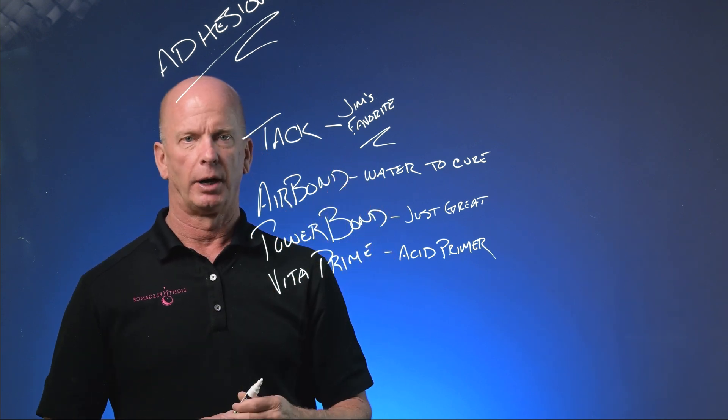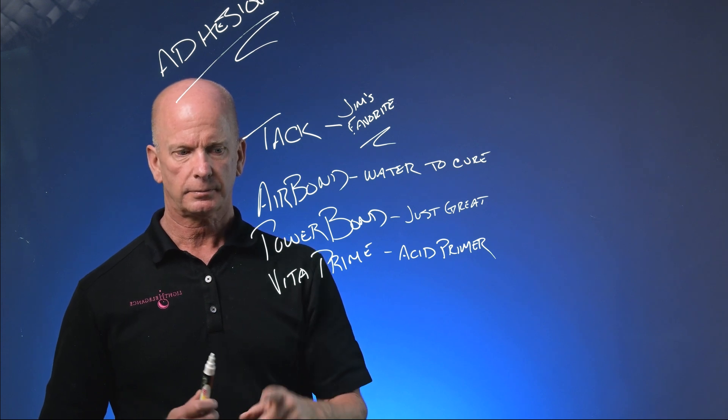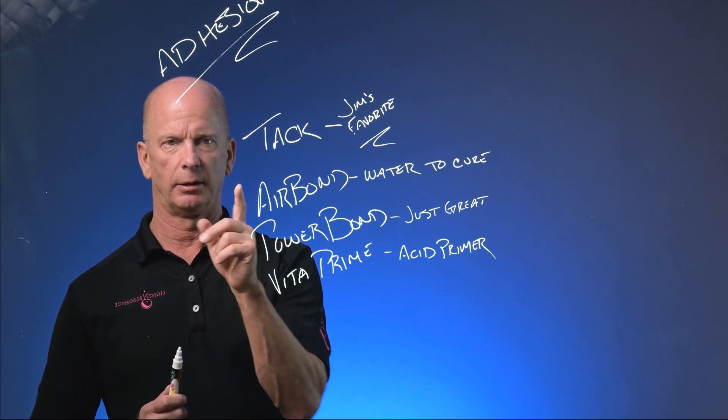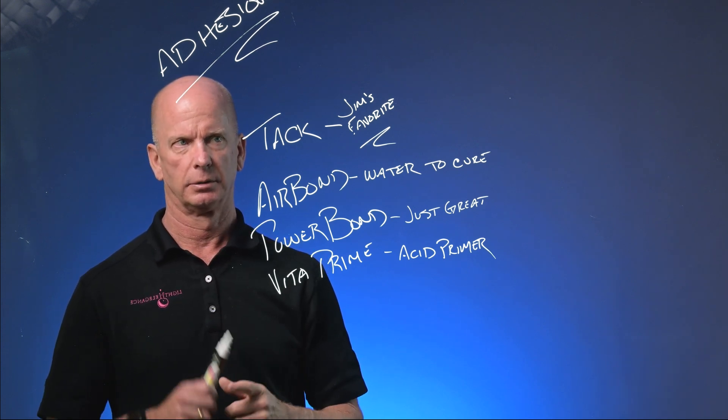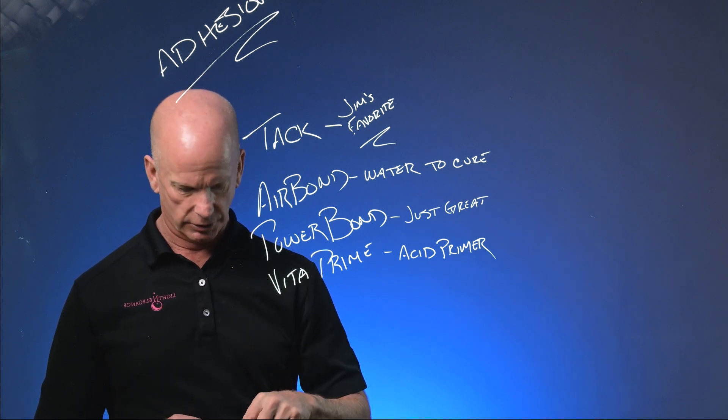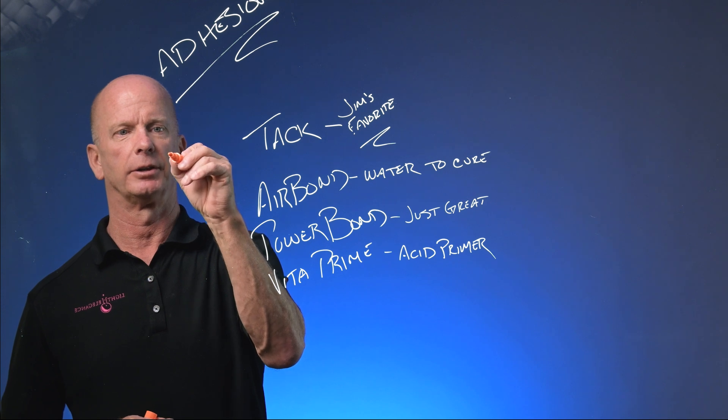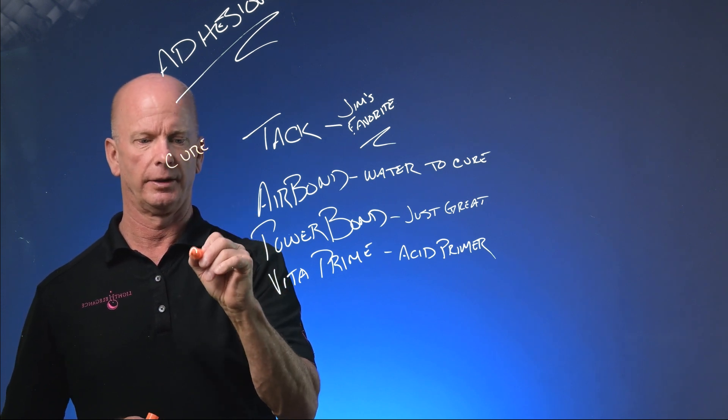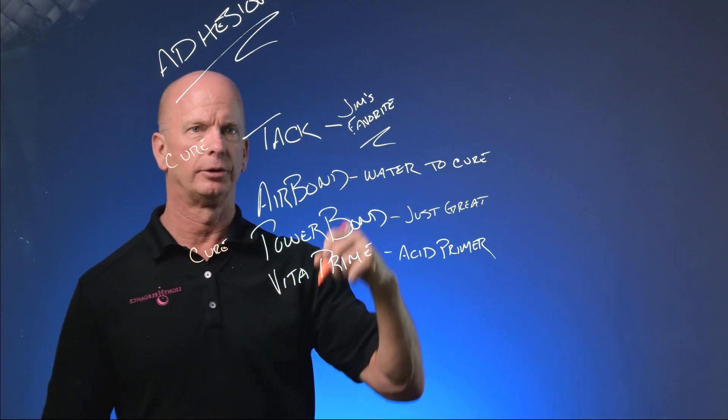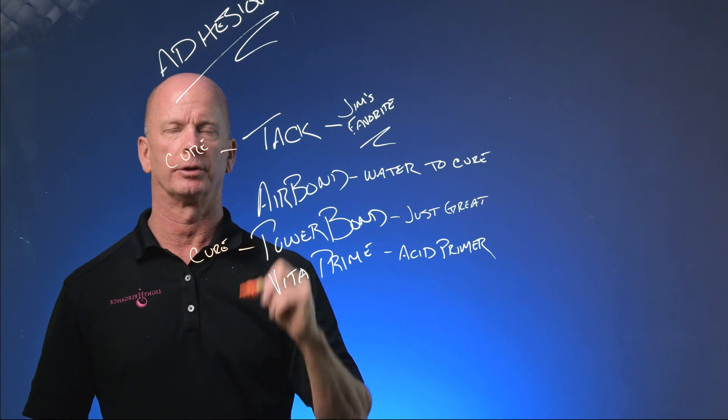But those are the bonding materials that we use. Vita Prime and air bond do not require curing. Tack and power bond require curing. So let's use a different color. We just write down cure. And then cure. The other two do not require any kind of curing, but those two do.